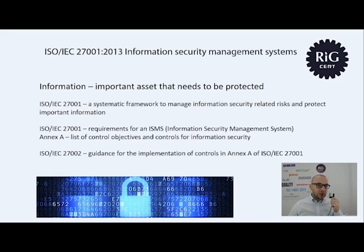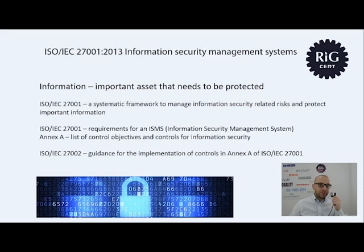The other standard, on the other hand, 27002, is a guidance — a guidance for the implementation of ISO 27001 controls from Annex A. It's not mandatory to apply the guidance, but it provides really good information for organizations that intend to implement the controls.